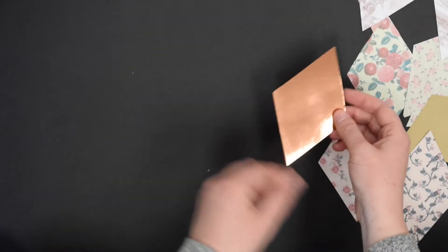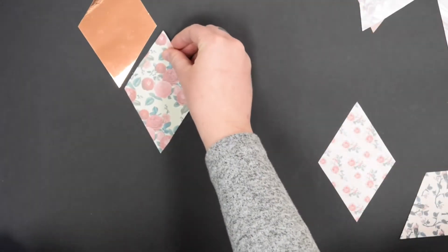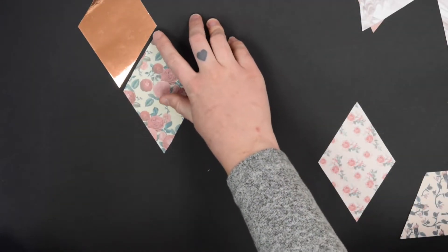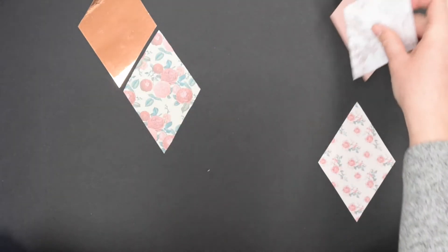After you're done cutting out all your shapes, you're going to start arranging them how you would like to see on the wall. I like to leave a little gap here between the shapes. You can choose to put them together if you'd like.